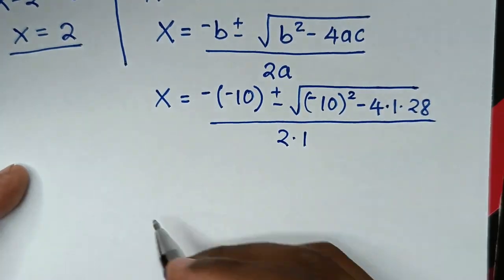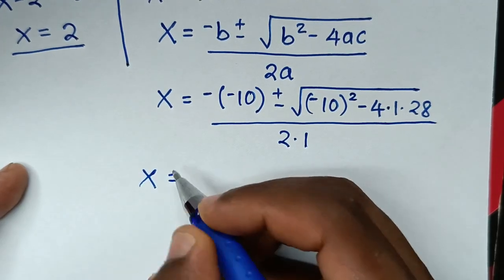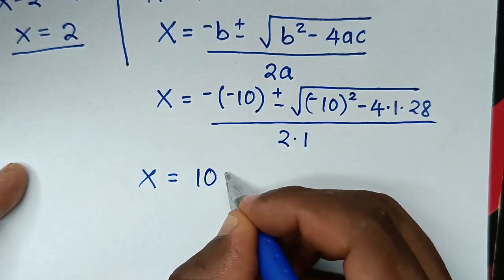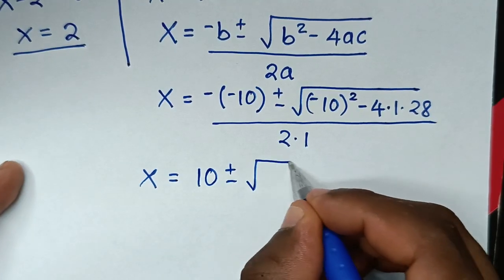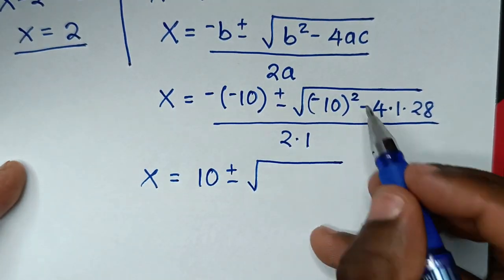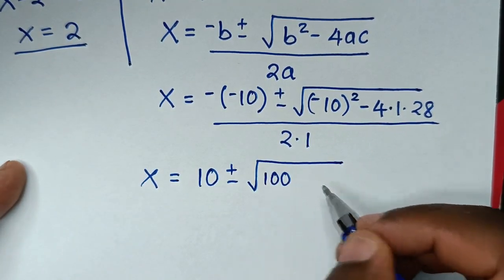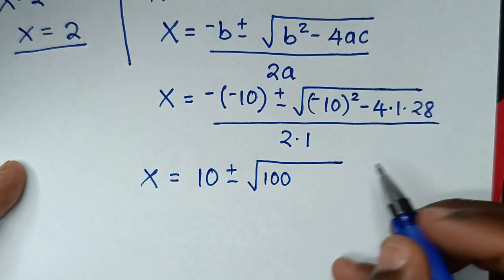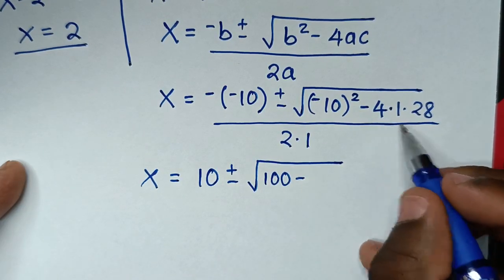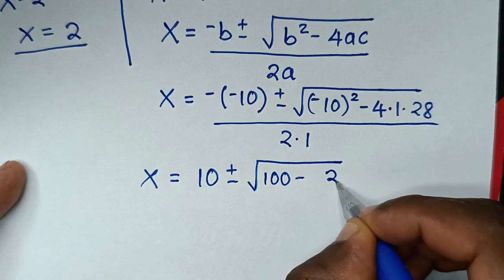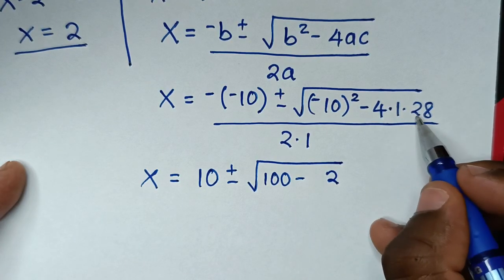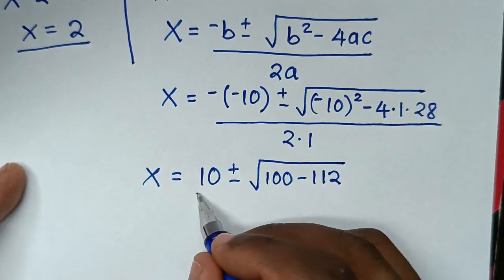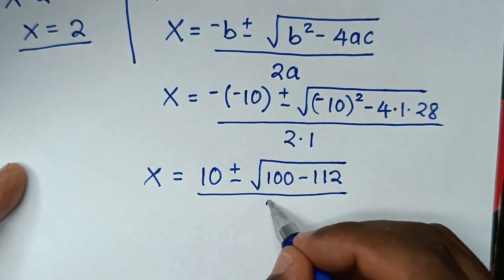In the next step: x = 10 ± √(100 - 112). For the product 4 × 1 × 28: 4 × 28 = 112. All over 2.